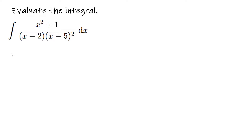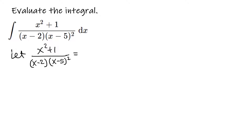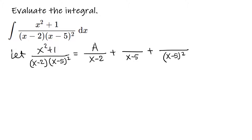So we write this fraction — x squared plus 1 over (x minus 2)(x minus 5) squared — as A over (x minus 2) plus B over (x minus 5) plus C over (x minus 5) squared, with constants A, B, and C on the tops.